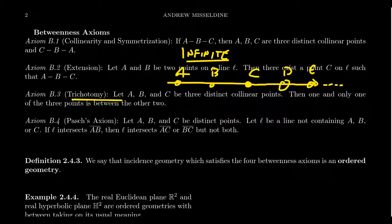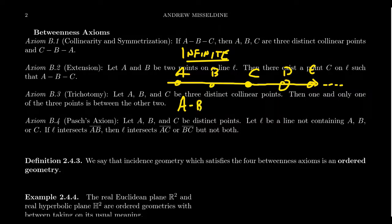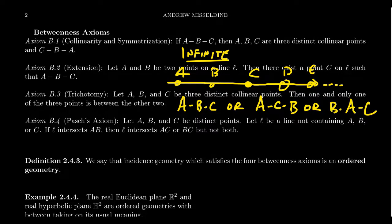Axiom B3 is trichotomy. It says: if you have three distinct collinear points A, B, C, then one and only one of the three betweenness relationships holds: either A-B-C (B is between A and C), or A-C-B (C is between A and B), or B-A-C (A is between B and C). Compare this with B1: B1 says a betweenness relation implies collinearity, while trichotomy says three collinear points must satisfy exactly one of the three betweenness relationships. Because of symmetrization, the flipped versions are also covered.